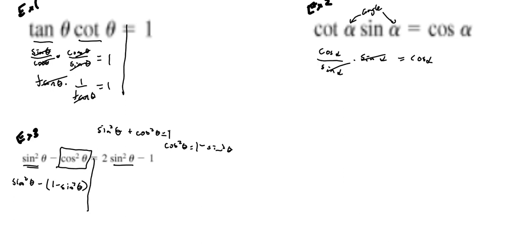We have sine squared theta minus 1 plus sine squared theta. Sine plus sine equals 2 sine squared theta minus 1. That's where we do our algebra to simplify, and look what we get - we have exactly what we're looking for.